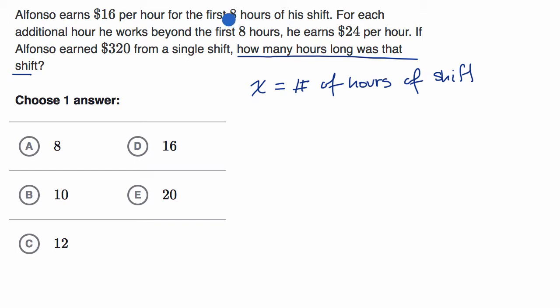We can see that he's working more than eight hours because eight times 16, you might be able to do that in your head, but it's nowhere close to $320. So he definitely worked more than eight hours. So he's going to make $16 per hour times the first eight hours and then plus, he's going to make $24 per hour times the remaining hours.